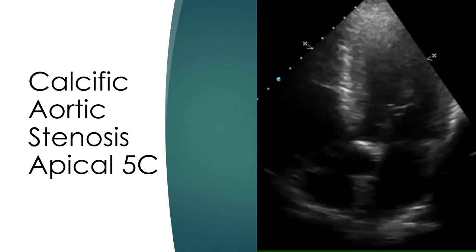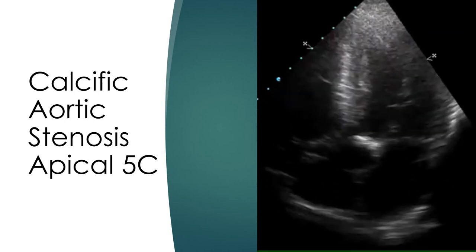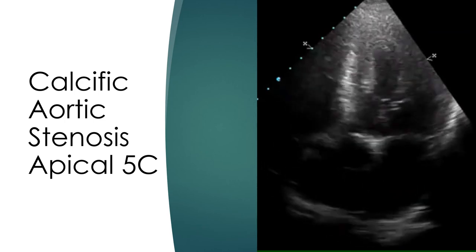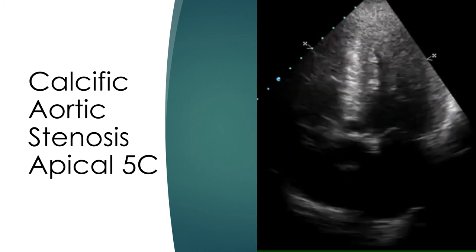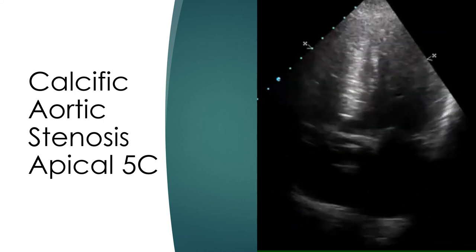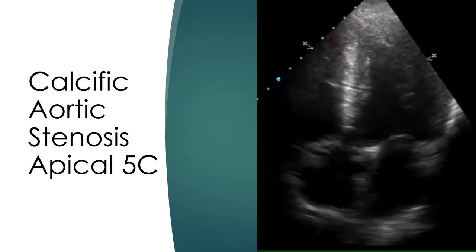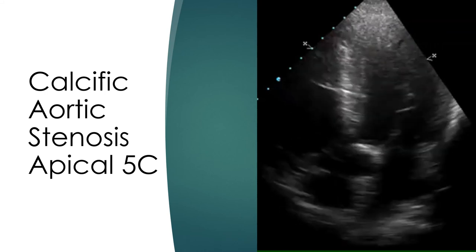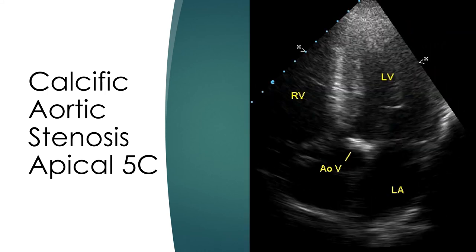Another view used for estimating the gradient is the suprasternal view, especially when associated mitral regurgitation gets picked up by the Doppler beam giving a falsely high gradient from the apical 5-chamber view. Still frame from apical 5-chamber view showing four cardiac chambers and the aorta with calcified aortic valve. The interventricular septum can be seen thickened as part of left ventricular hypertrophy.